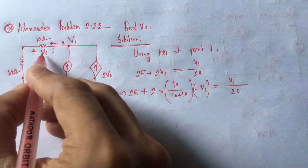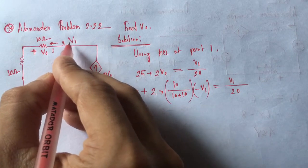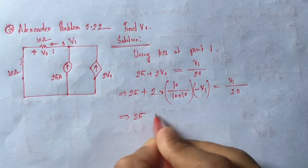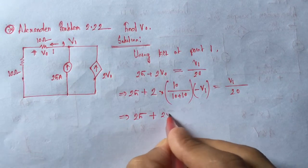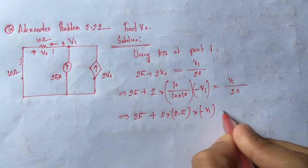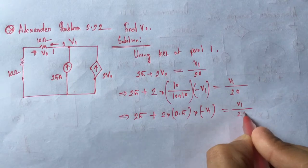So we have 25 plus 2 into 0.5 V1 is equal to minus V1 by 20.